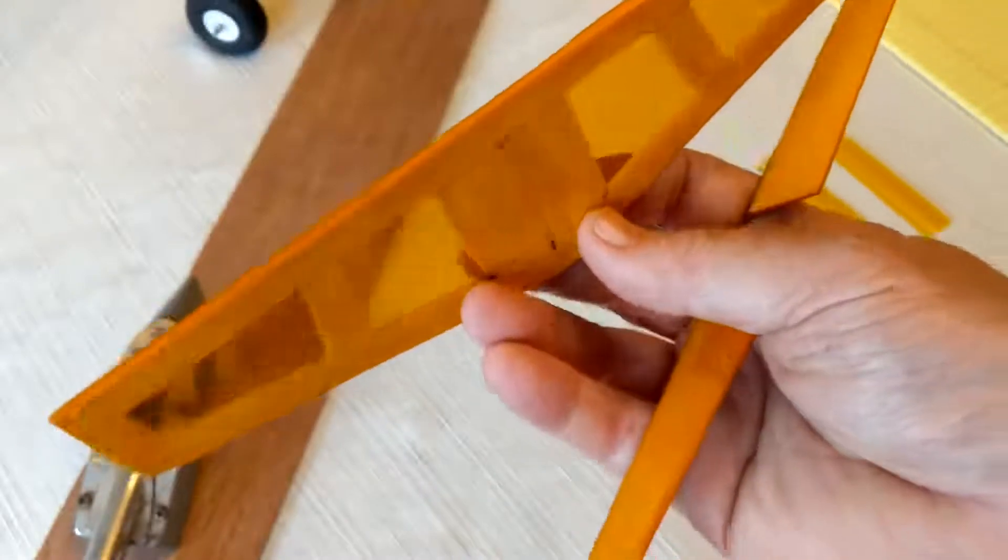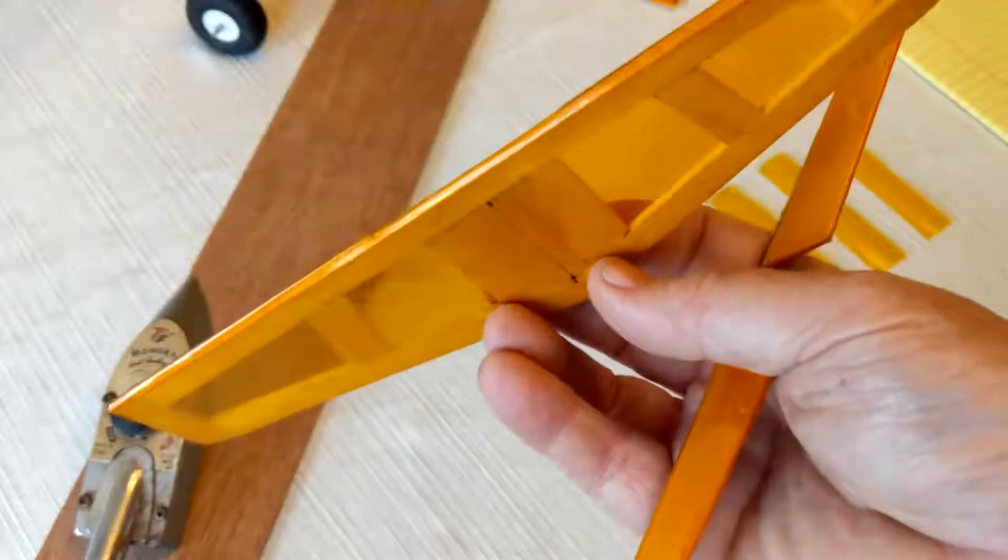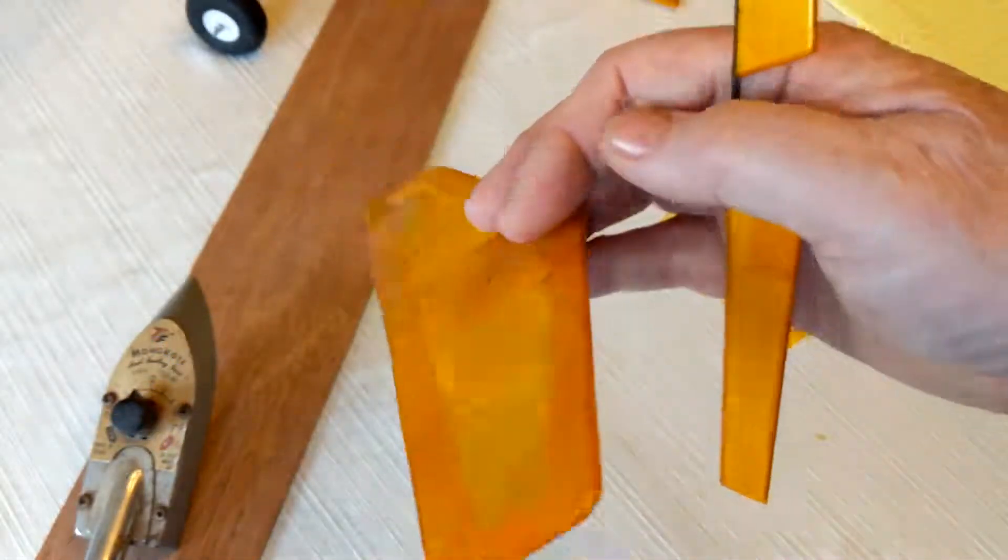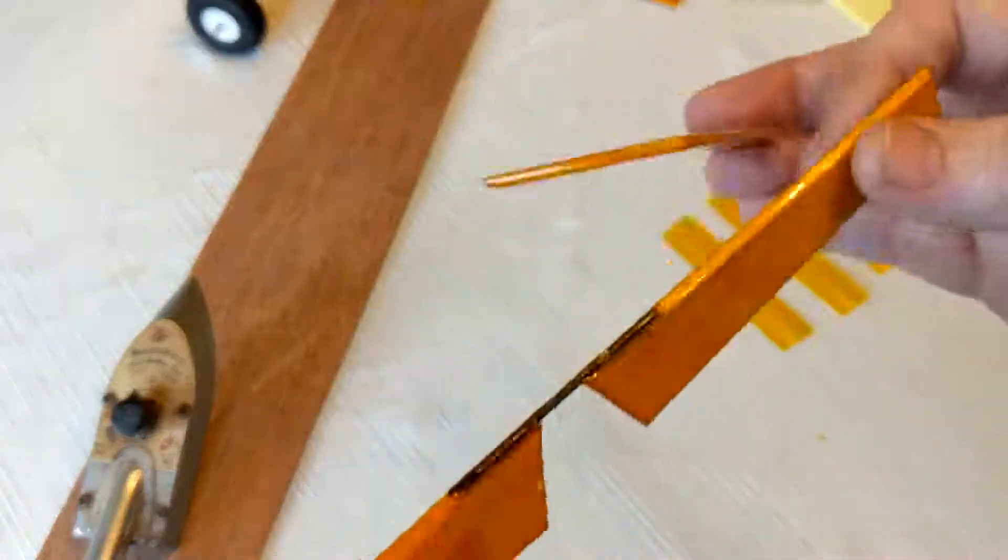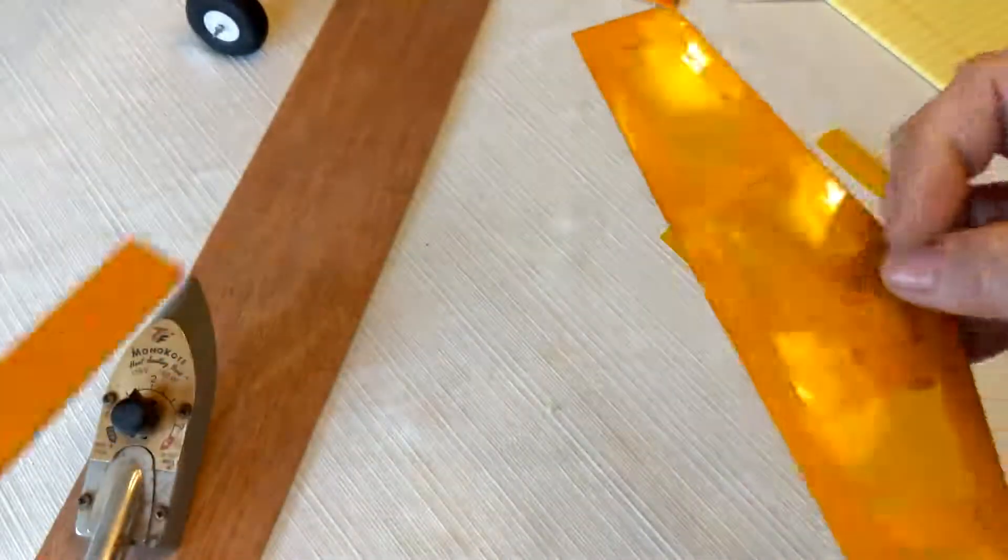So you want to take your two pieces, in this case the horizontal stabilizer or elevator. And I put the bevel side down on the main part and also on the part that's going to be hinged.